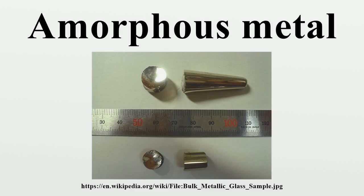But unlike common glasses, such as window glass, which are typically electrical insulators, amorphous metals have good electrical conductivity. There are several ways in which amorphous metals can be produced, including extremely rapid cooling, physical vapor deposition, solid-state reaction, ion irradiation, and mechanical alloying.